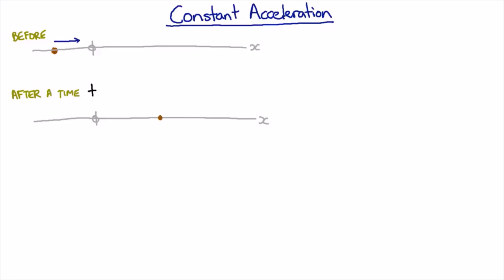The initial velocity is a vector, it's got a direction, so it's either positive or negative if we're going in one dimension. And we're going to call that u, so that's its initial velocity.